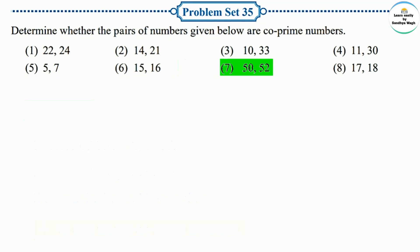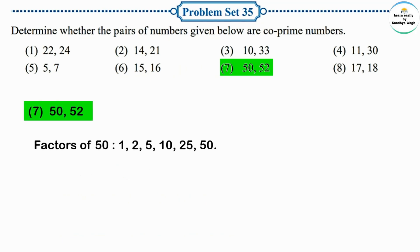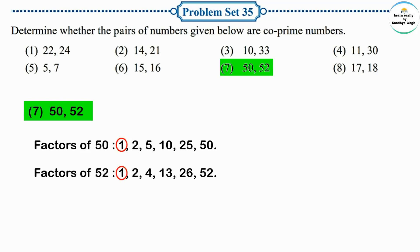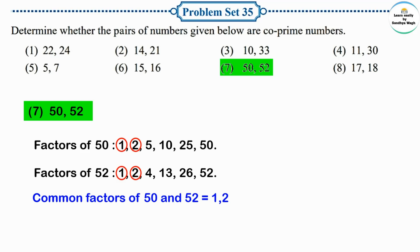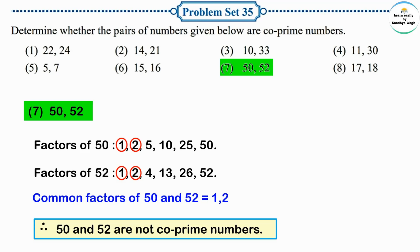Next pair: 50 and 52. Factors of 50: 1, 2, 5, 10, 25, 50. Factors of 52: 1, 2, 4, 13, 26, 52. The common factors are 1 and 2. Common factors of 50 and 52 are 1 and 2. Since 2 is also a common factor, therefore 50 and 52 are not co-prime numbers.